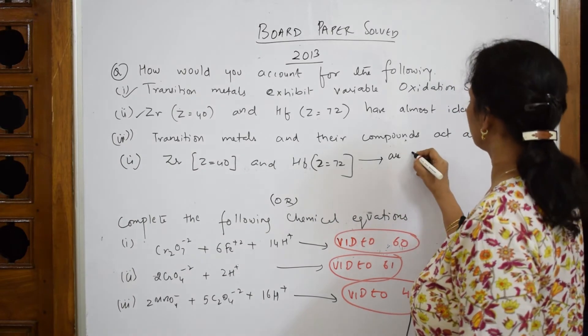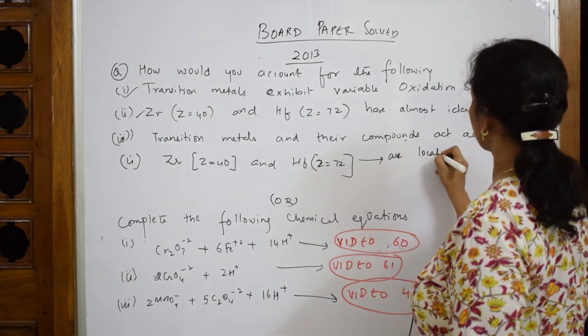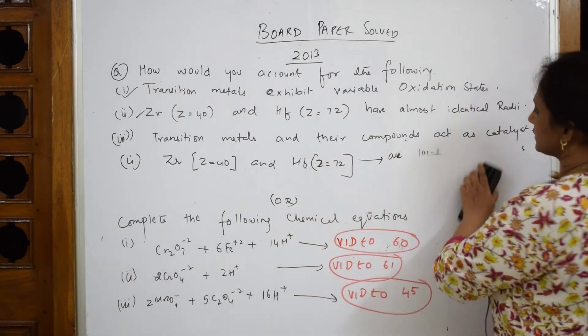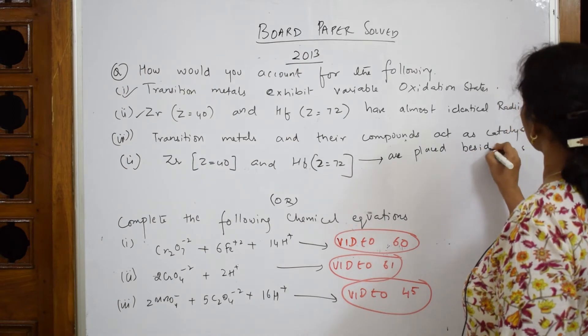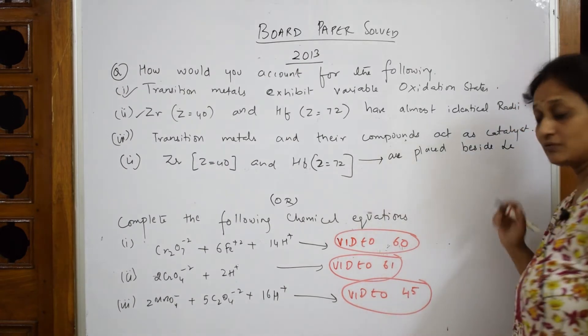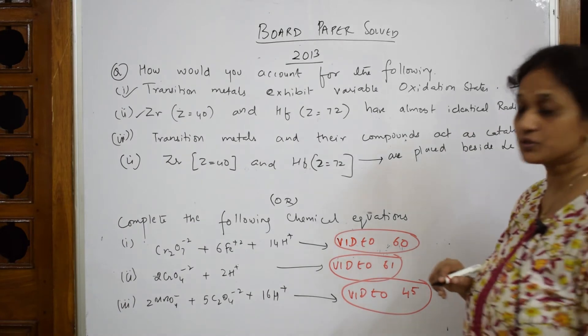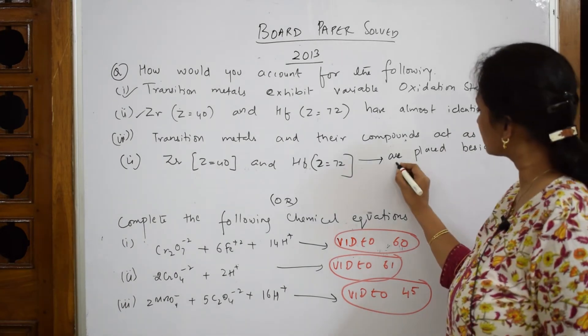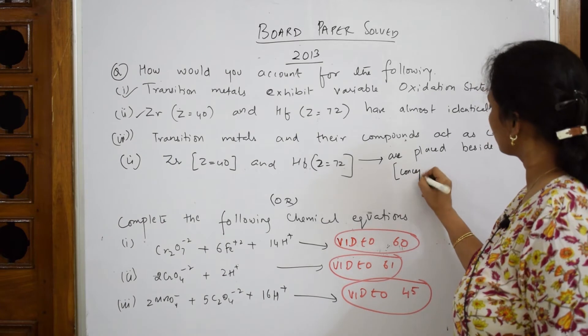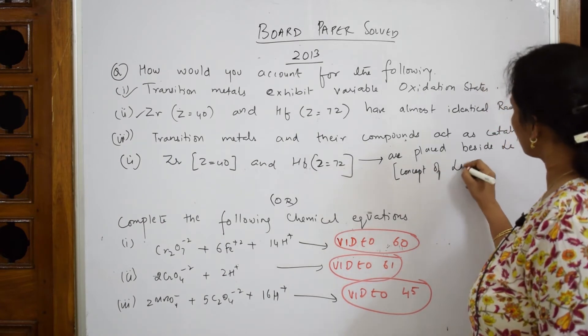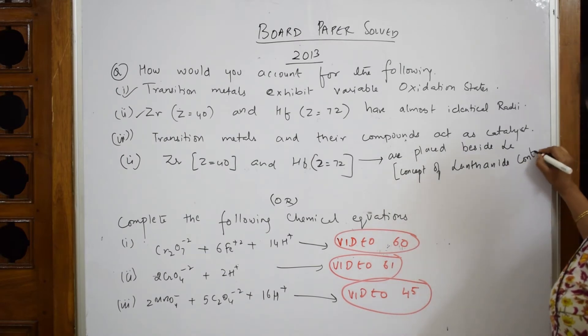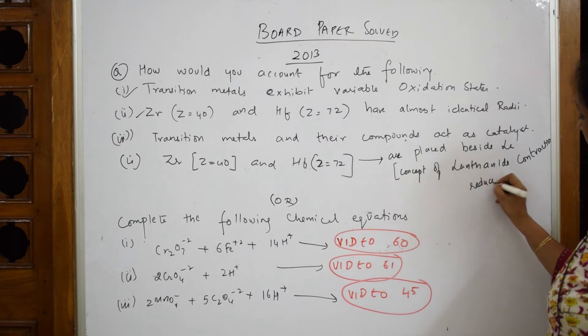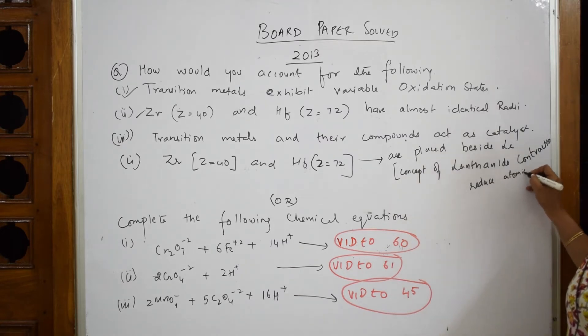Are placed beside lanthanum. Right. When you see lanthanum, what concept you should remember? Because of this, concept of lanthanide contraction. Lanthanide contraction reduces atomic radii. That's it, simple. Nothing to explain, nothing to draw the graph or something. But concept you should be clear. Lanthanide contraction concept should be clear for you all.